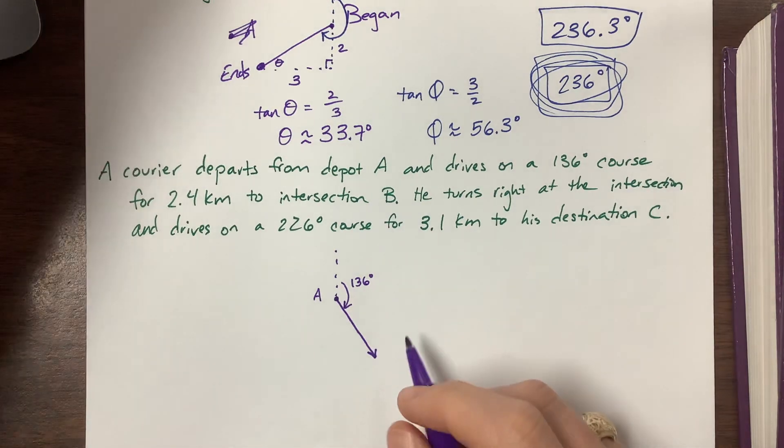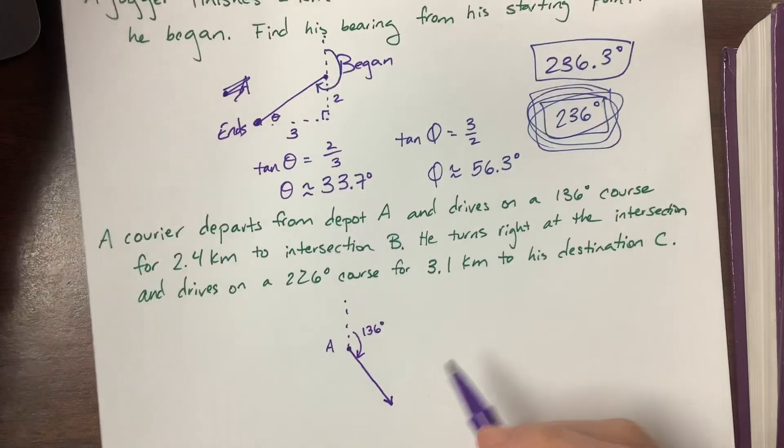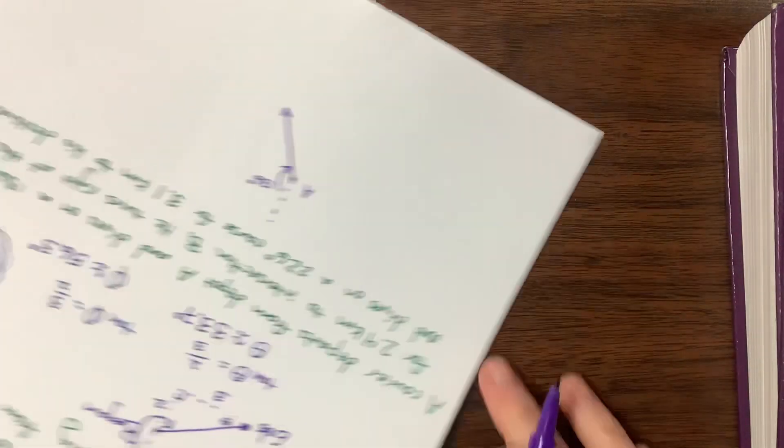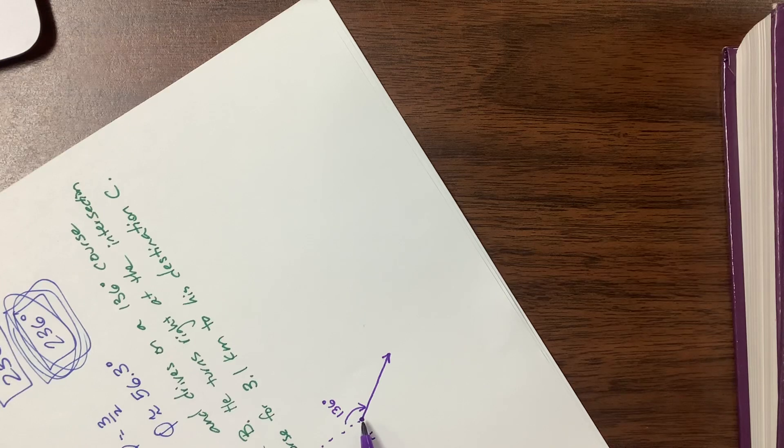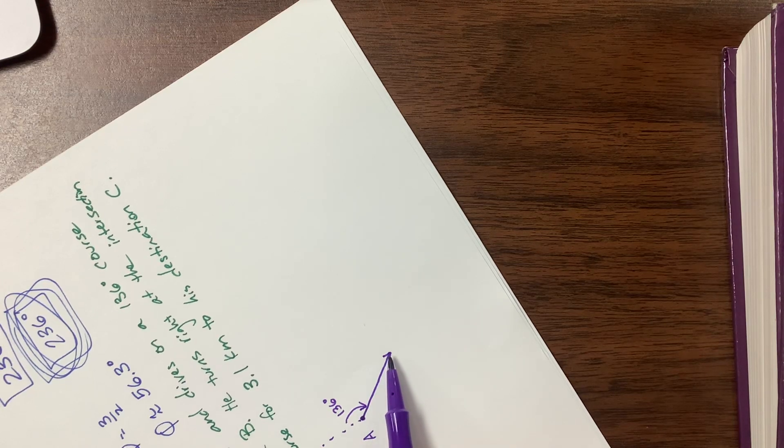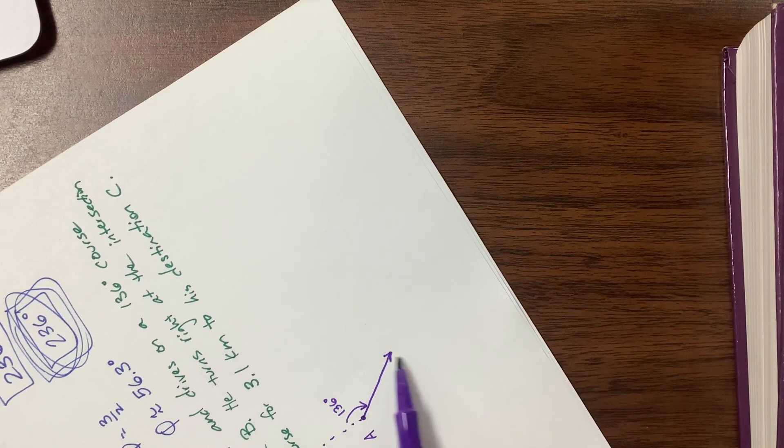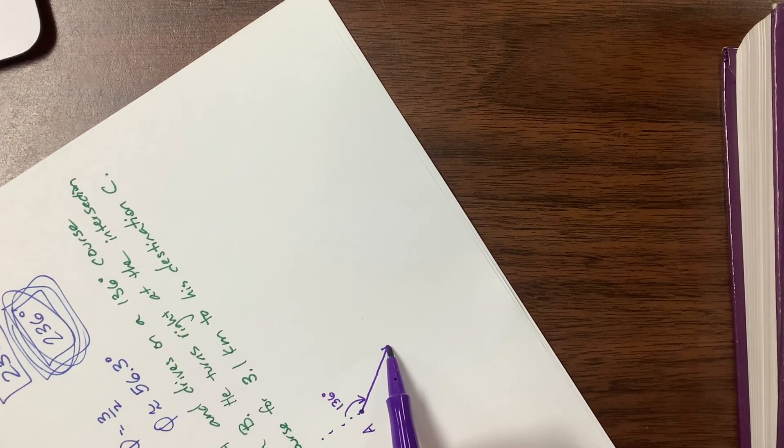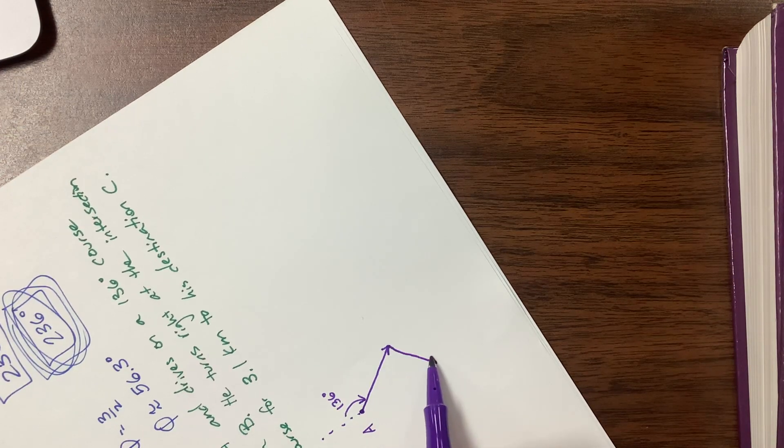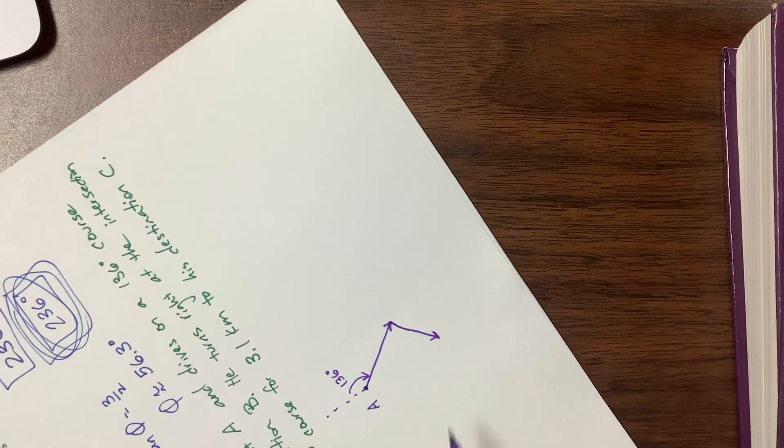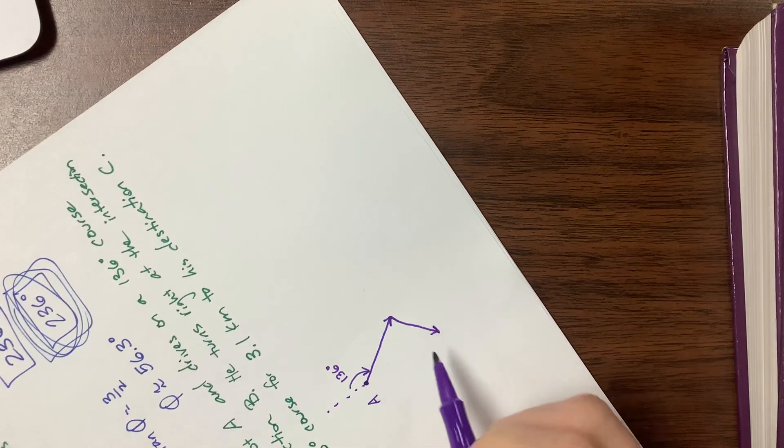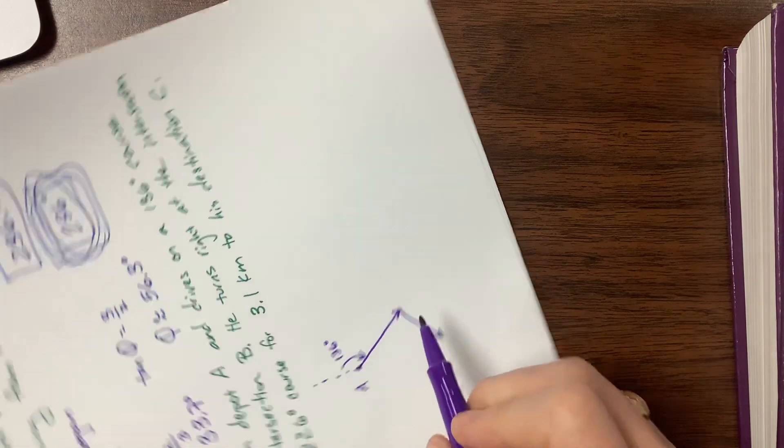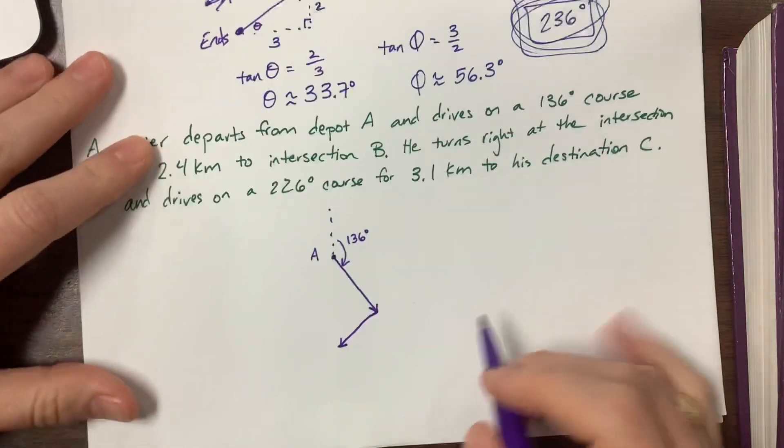And then it says he turns right at the intersection and drives on a 226 degree course. Well notice, if he's turning - they said he's turning right. Well what does that mean? What they're doing is they're driving down this road. Can you see if I turn my paper? I'm going this way. So if I turn right, that means that I've now gone this way. So when they say turn right, that sounds like we need a right angle, but let's verify.